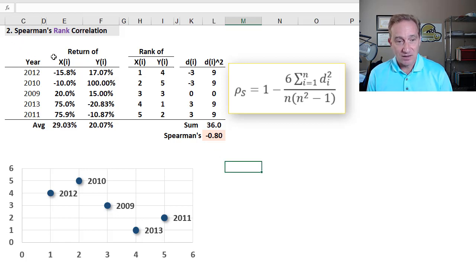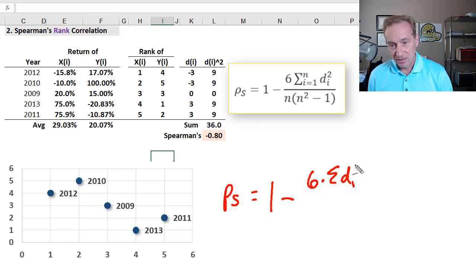So, for the Spearman's rank correlation, that formula is going to be given by, we could denote it using rho as a very universally well-known correlation measure, but then Messner gives it a subscript of S for Spearman's, and then it's going to be 1 minus 6 multiplied by the sum of the differences squared, so this is d sub i, as i goes from 1 to n, and the 6 is just due to mathematics of the formula, and we divide that by n multiplied by the quantity n squared minus 1.